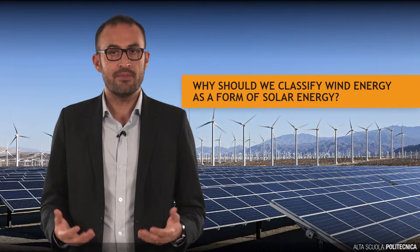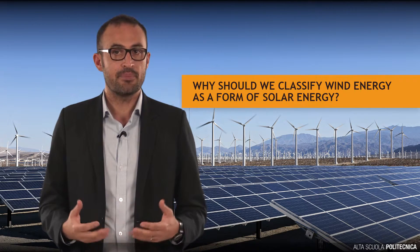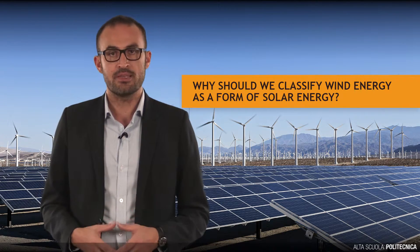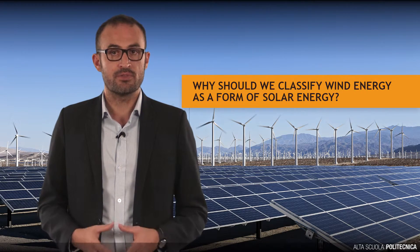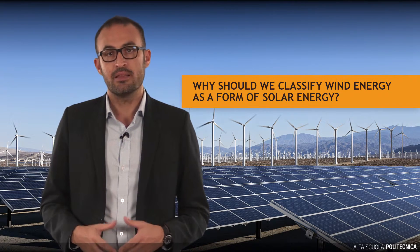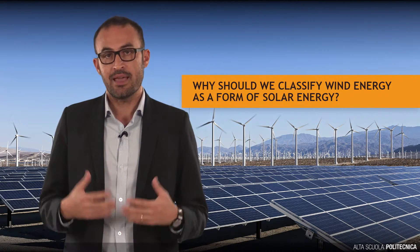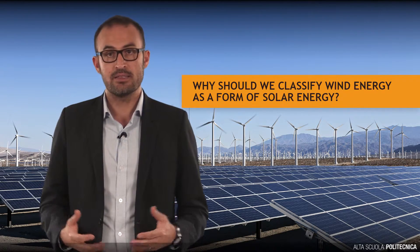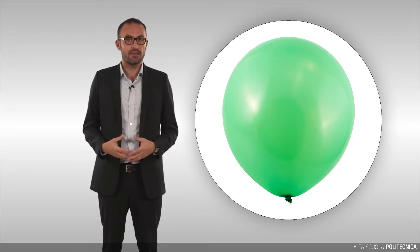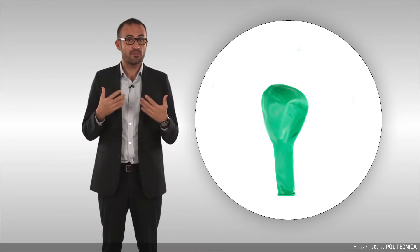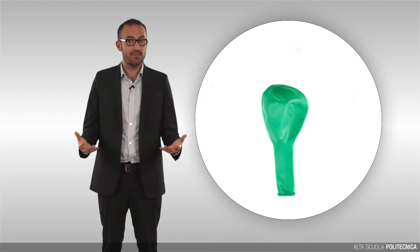The Sun heats the atmosphere unevenly, causing gradients of temperature, density and pressure in the air. High and low pressure regions are therefore originated, which are also affected by the Earth's rotation and irregularities of the Earth's surface. When different masses of air get in contact, air flows from higher to lower pressure regions, like a deflating balloon.